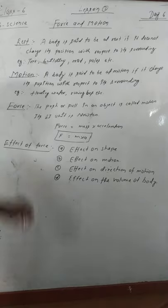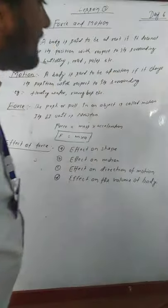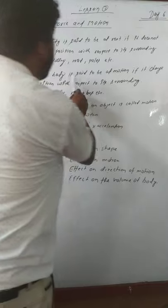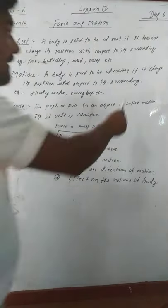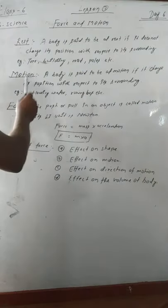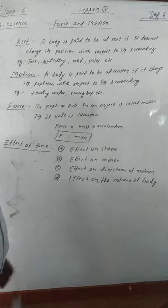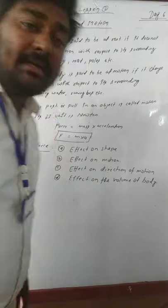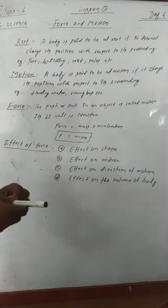Similarly, motion can be defined. A body is said to be in motion if it changes its position with respect to its surroundings — just like flowing water, a running bus, a walking person, a running train, or a moving fan. These are all examples of motion.